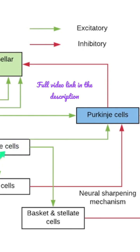The granule cells, in addition to the Purkinje cells, also excite the basket and the stellate cells.